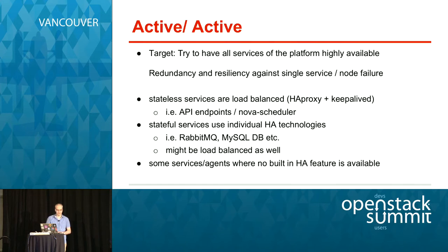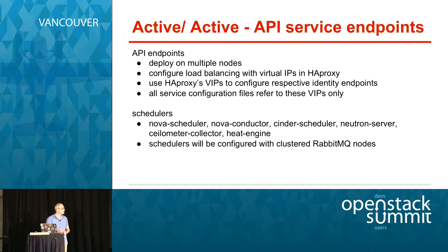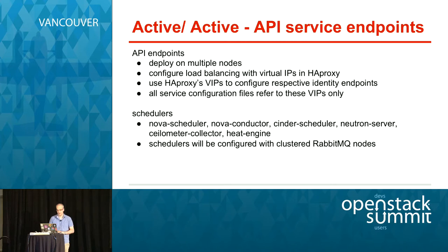For stateful services like RabbitMQ or the database, there are individual technologies at hand — they are all different, and you can load-balance these systems as well. Some services or agents have no HA feature available. For API endpoints, you could deploy all APIs on multiple nodes, configure load-balancing via HAProxy, and then only the virtual IPs of the proxy will be used for registration of API endpoints at the identity service. In all configuration files, you use only the virtual IPs.